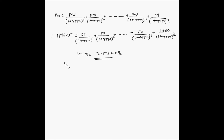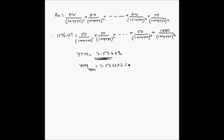But if you recall, this yield to maturity was considering semi-annual payments, so this is a half-yearly rate of return. We want the nominal yield to maturity, which is the annual yield to maturity. So nominal yield to maturity equals 3.5368 multiplied by 2, which equals 7.0736%. This is the annual nominal yield to maturity.